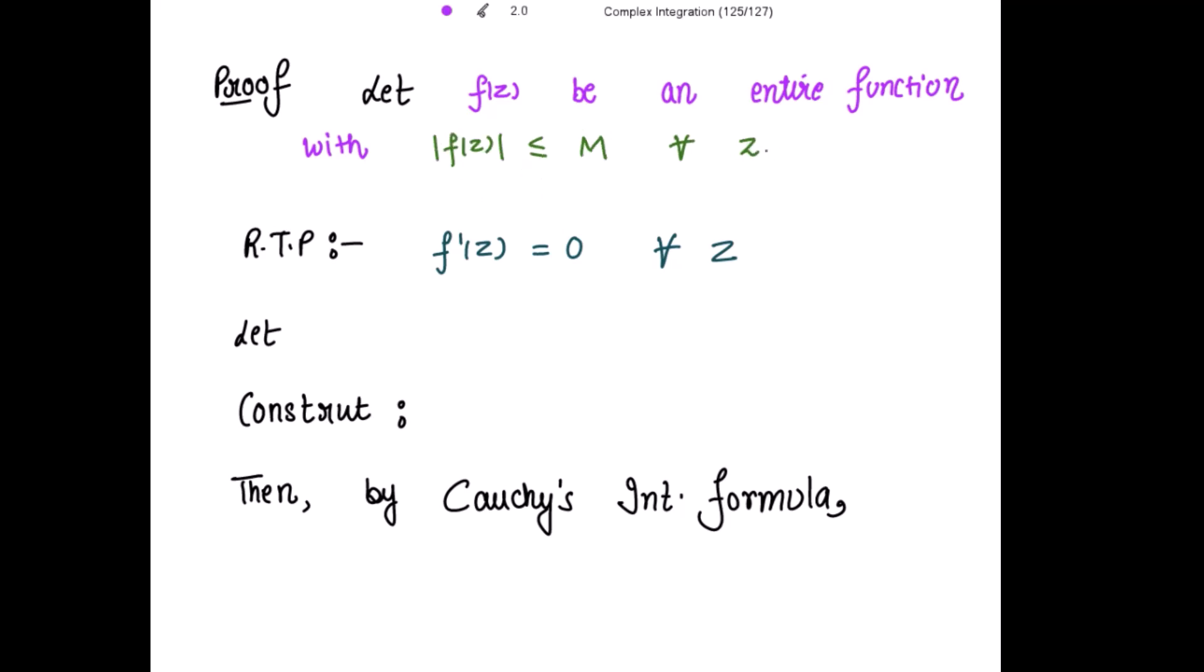Now we have to prove that this function is constant. Then what is required to prove that its first derivative is 0 for all the values of z. So let's take any complex number, let's say z_0, be any complex number and let's construct the circle mod of z minus z_0 to be equal to r.